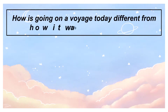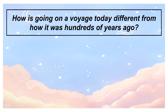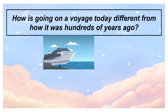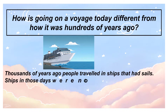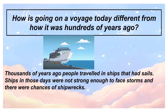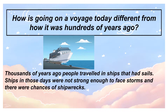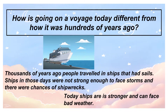Voyages in ancient times were very tough. How is going on a voyage today different from hundreds of years ago? Thousands of years ago, people travelled in ships that had sails. Ships in those days were not strong enough to face storms and there were chances of shipwreck or pirate attack. Today, ships are stronger and can face bad weather too — that is a big and very important difference.